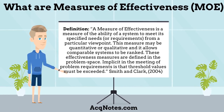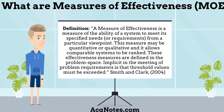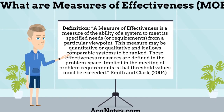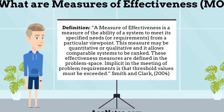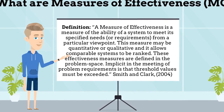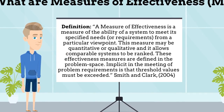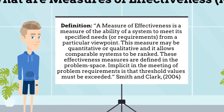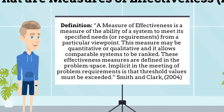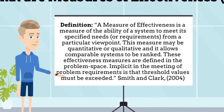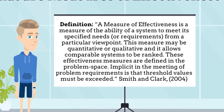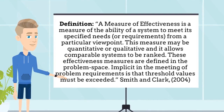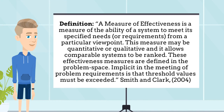What are Measures of Effectiveness? Measures of Effectiveness, or what I call MOE, are measures designed to correspond to the accomplishment of mission objectives and the achievement of desired results. They quantify the results to be obtained by a system and may be expressed as probabilities that the system will perform as required. The definition by Smith and Clark states: a measure of effectiveness is a measure of the ability of a system to meet its specified needs, or requirements, from a particular viewpoint.